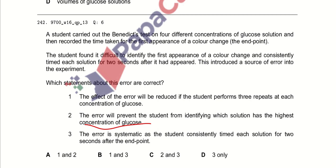The error is systematic because it increased the time duration of all the experiments across all concentrations of glucose. The error is systematic as the student constantly timed the solution for two seconds after the end point. So, option three is the right answer.